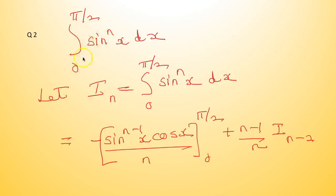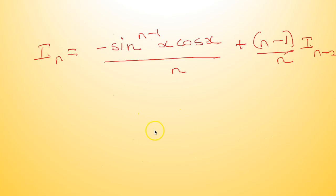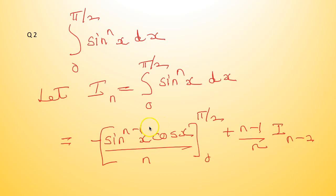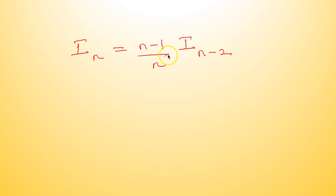A corollary: for integral from 0 to π/2 of sin raised to nx dx, we call this I_n. Applying the earlier formula, it is [−sin^(n−1)x·cos x / n] from 0 to π/2, plus (n−1)/n · I_{n−2}. Substituting: cos(π/2) = 0 and sin(0) = 0, so I_n = (n−1)/n · I_{n−2}.